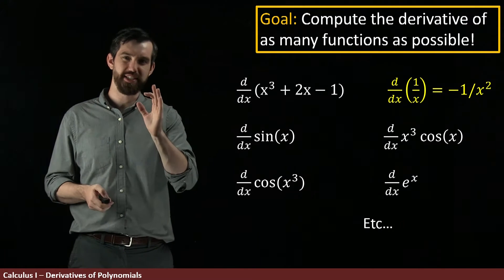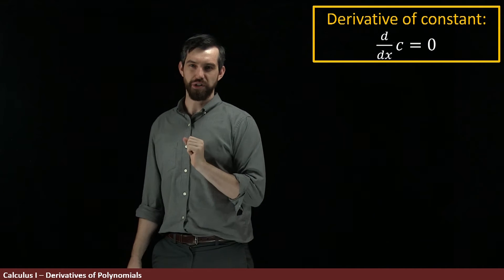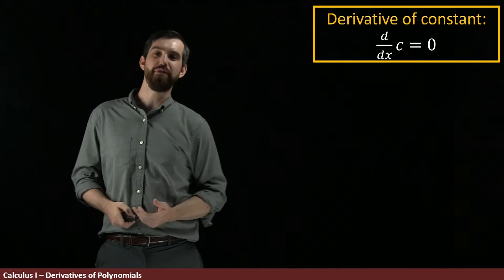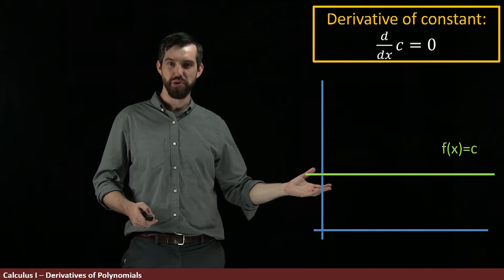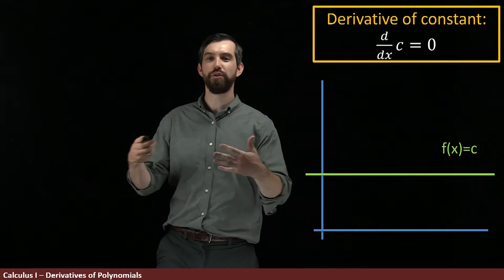So the first one I want to consider is taking the derivative of a constant function. This is the function f(x) equal to a constant, and a graph of it is going to look like this - some positive value of c, just a horizontal line.